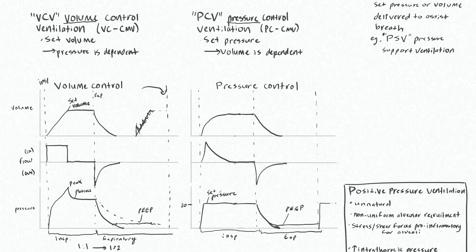Your peak inspiratory pressure during pressure control mode is whatever you have your pressure set to — but only if you don't have any PEEP. If we started from zero and set inspiratory pressure to 20, our peak pressure is 20. But if we add 5 of PEEP between breaths, we now have a starting pressure of 5. So with that same inspiratory pressure of 20, our resulting peak pressure — the total airway pressure during the inspiratory period — will actually be 25 instead of 20.